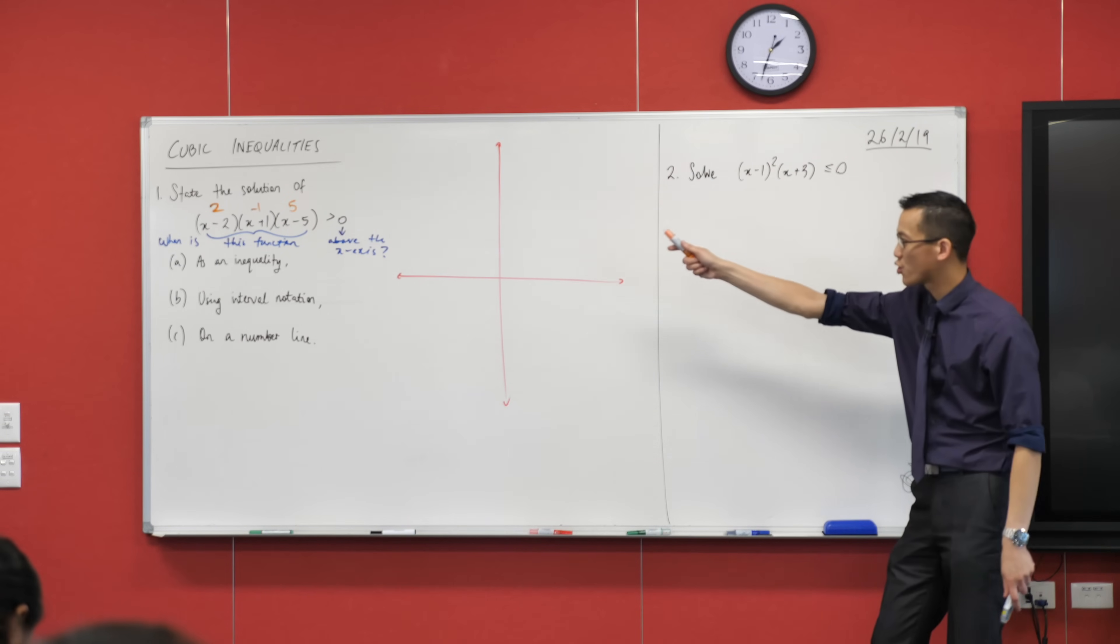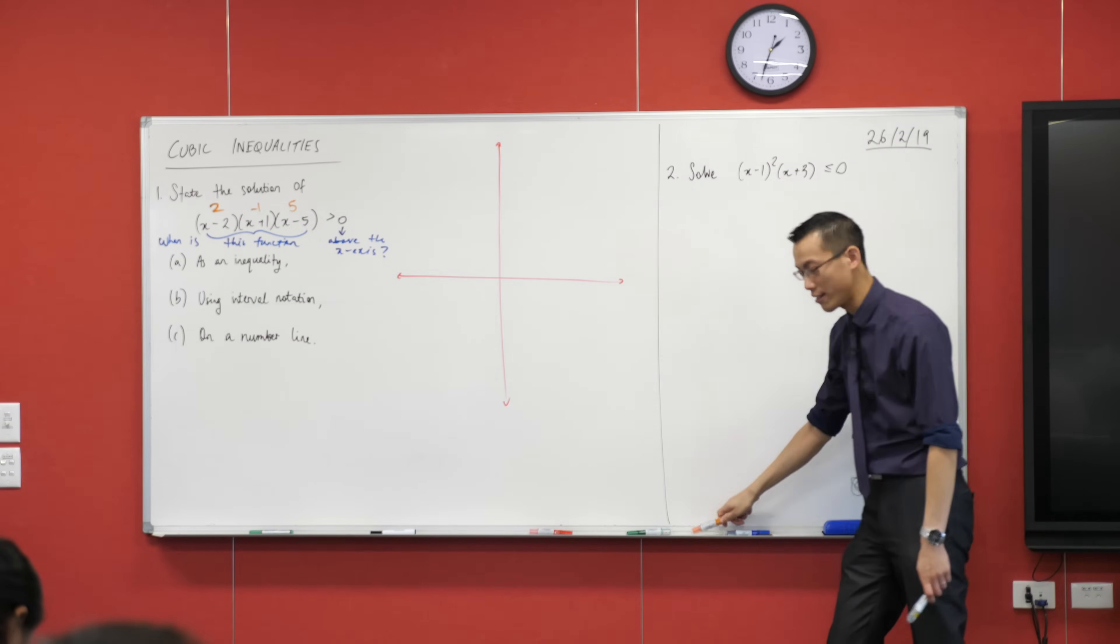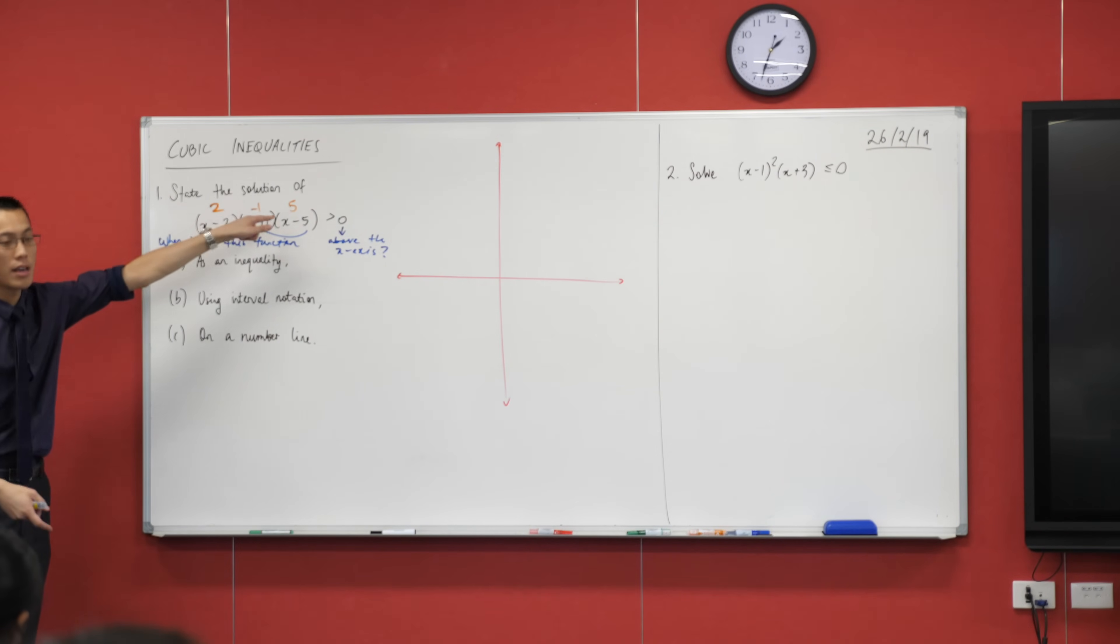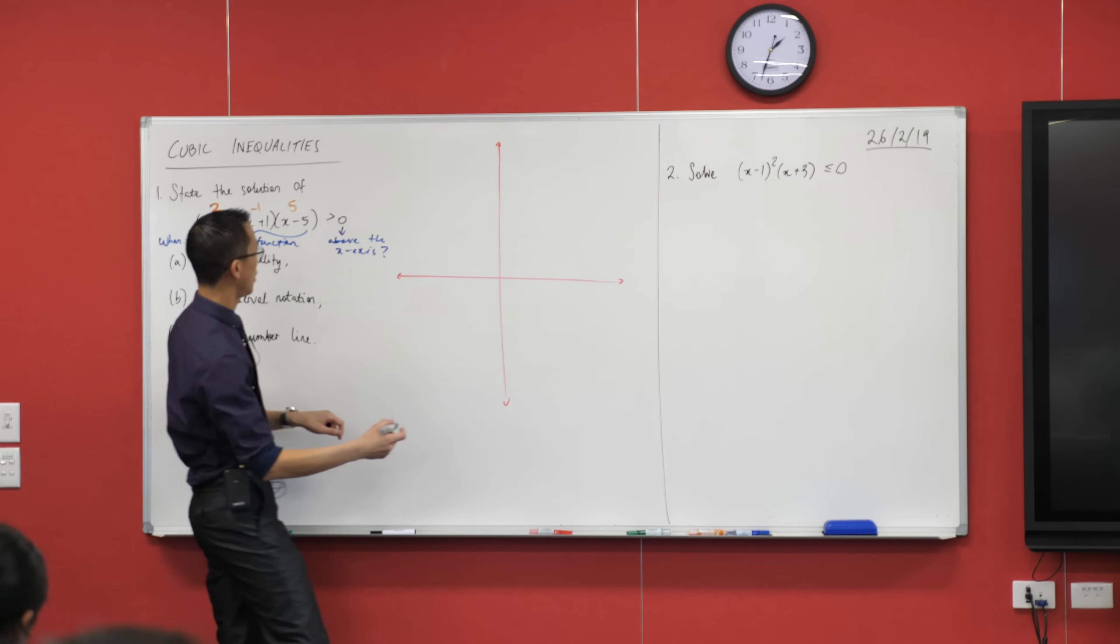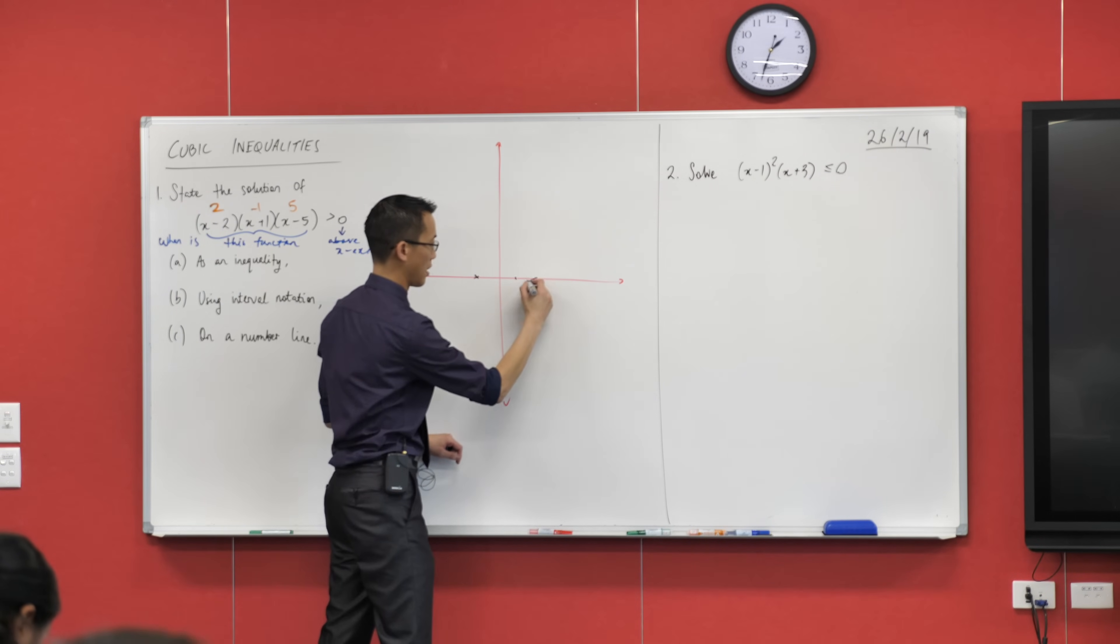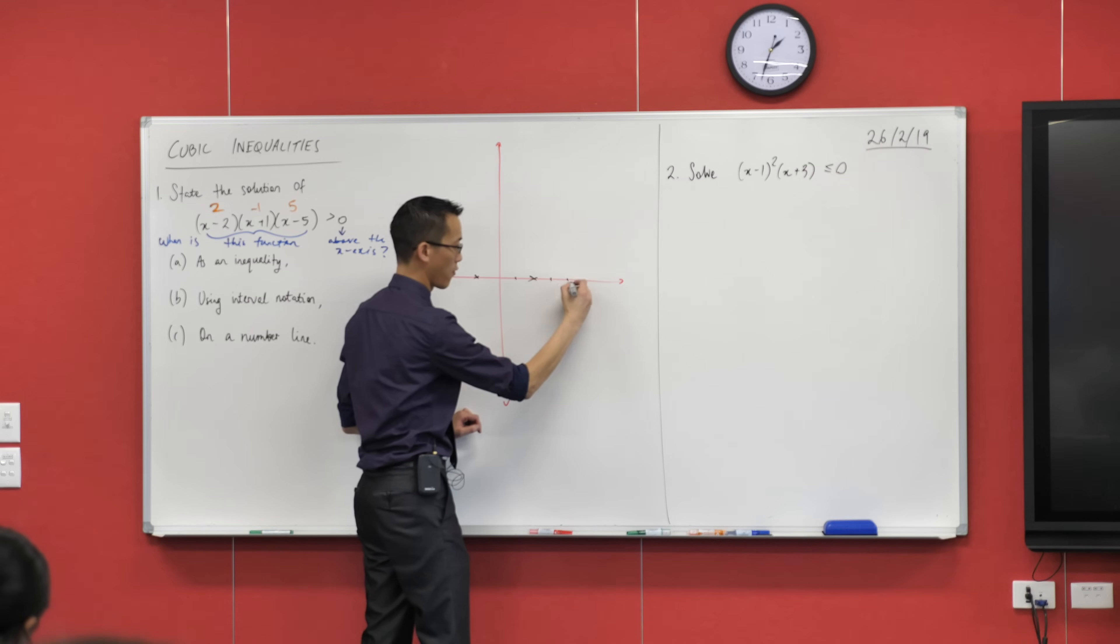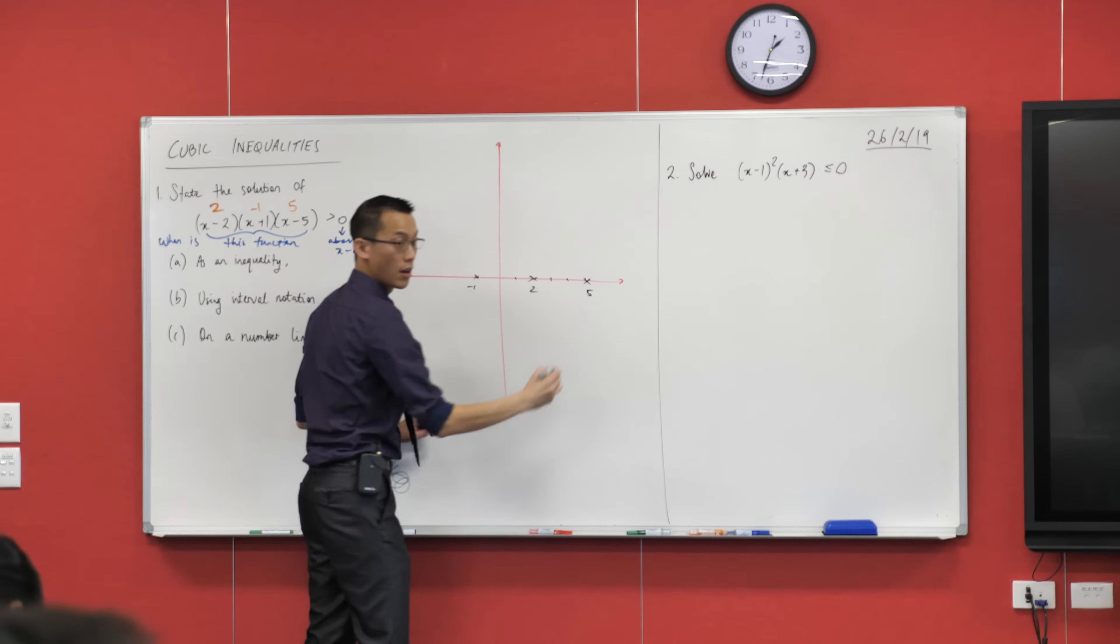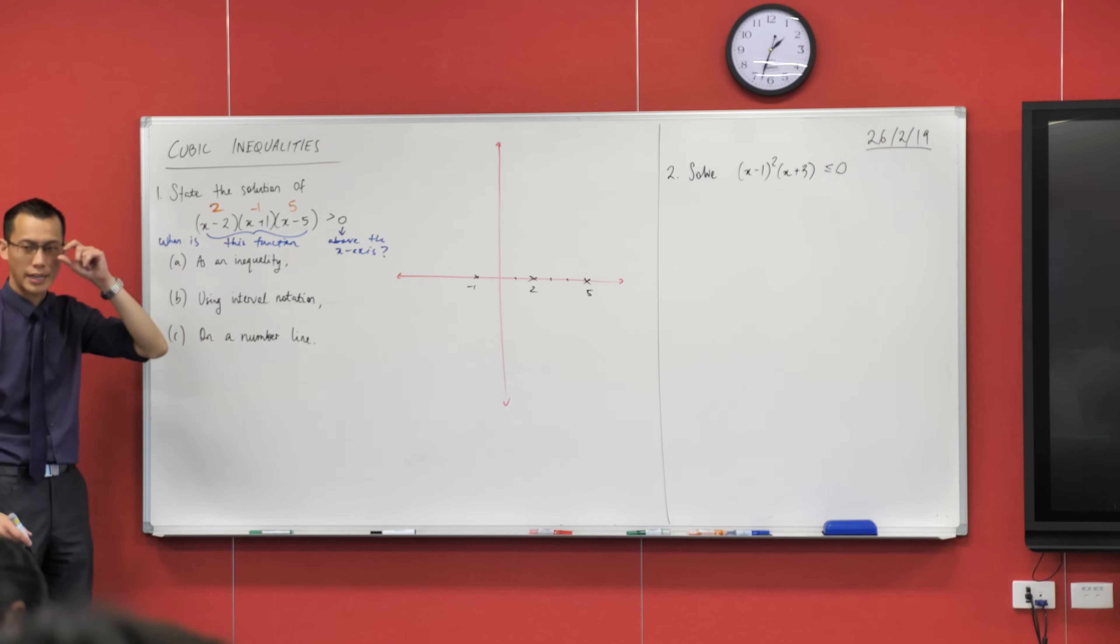Now, I'm going to go from there straight over to my Cartesian plane and I'm going to mark in those spots on the x-axis. These guys are my x-intercepts. So I've got, let's see here, there's negative one, one, two, there's two, three, four, five. There we go, negative one, two, five. So I've got my numbers on there that I've read off of here.